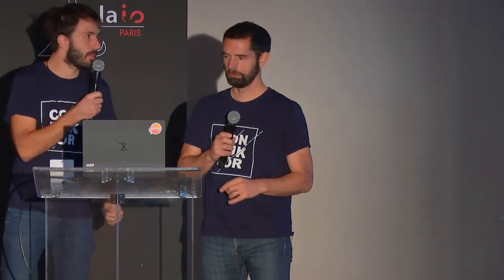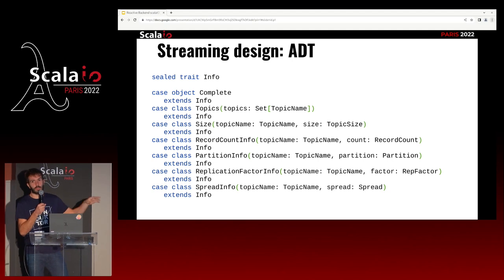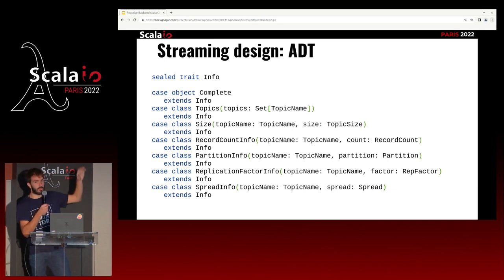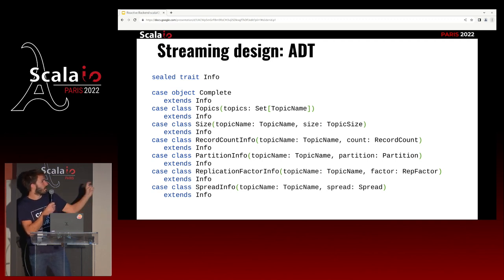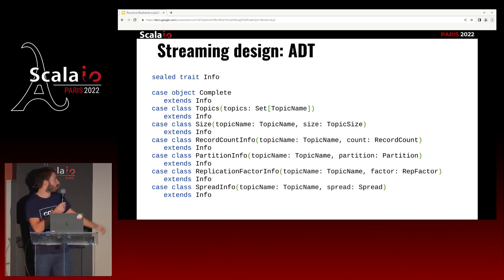Now I'm going to speak about the ADT we send in this stream. It's simple. There are two specific subtypes in this ADT: one is 'complete', which the back-end sends once to tell the front-end it has all the data it needs. The first one is a list of topics so the front-end can be prepared to display a table. After that, all others are a topic name related to data corresponding to a cell in the table — for example, topic size or replication factor.